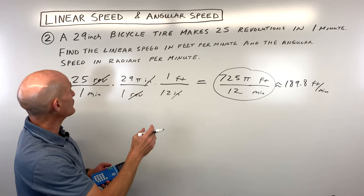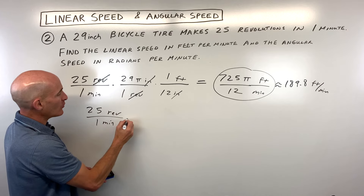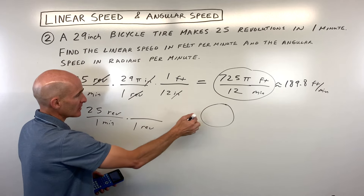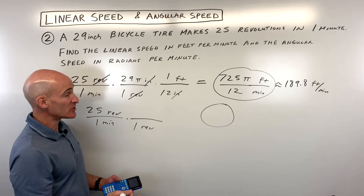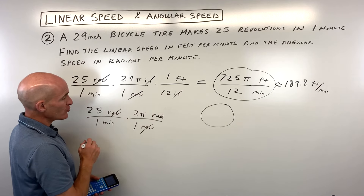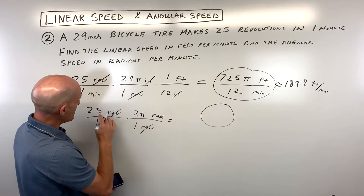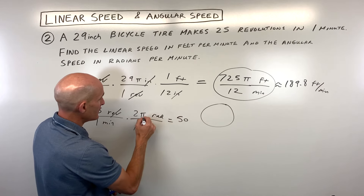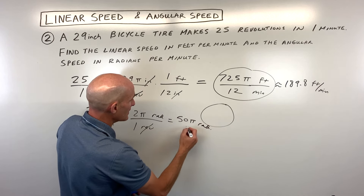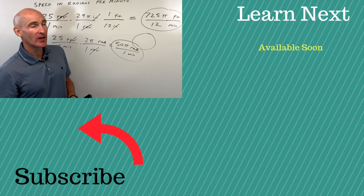Now for the angular speed — again, I go back to 25 revolutions per one minute. Our conversion factor is that for every one revolution, the angle traveled is 360 degrees, or 2 pi radians. The revolutions cancel, leaving radians per minute. Multiplying across: 25 times 2 is 50, over 1, giving us 50 pi radians per minute. That's your angular speed — the angle it turns through in one minute.